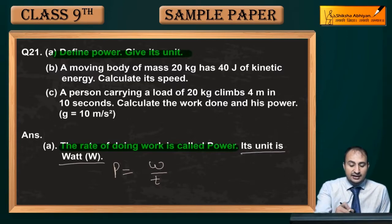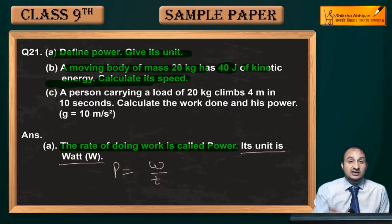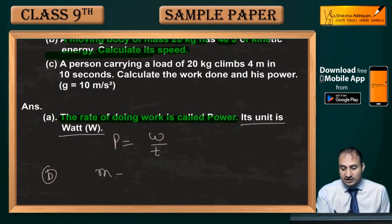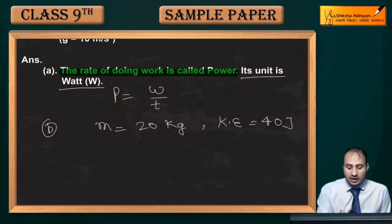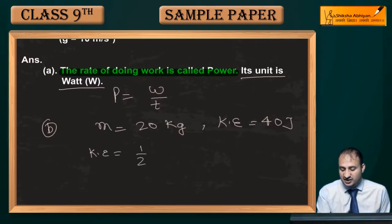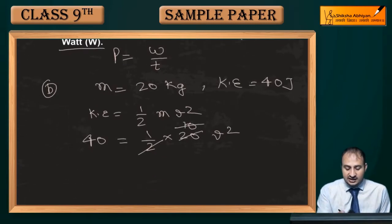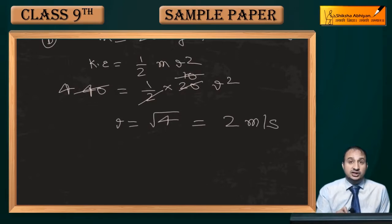Next question: A moving body of mass 20 kg has 40 joules of kinetic energy. Calculate its speed. Kinetic energy = ½ mv² → 40 = ½ × 20 × v² → 40 = 10 v² → v² = 4 → velocity = 2 meter per second. So the speed of the body is 2 m/s.